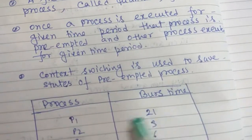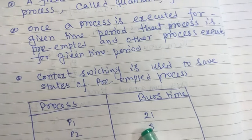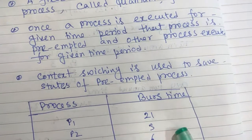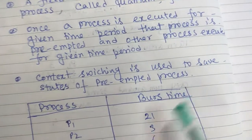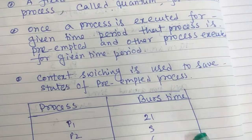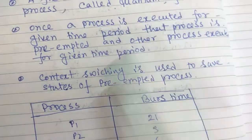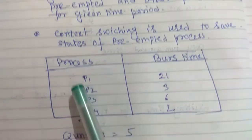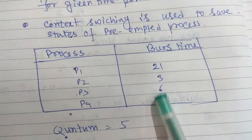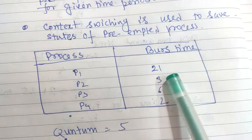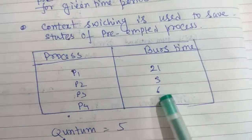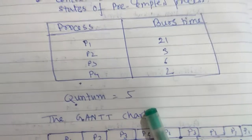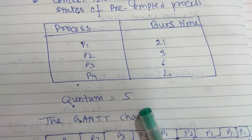If one process is preempted, it can be executed again later using context switching, so any other process can be executed in between. Here, the example gives processes P1 with burst time 21, P2 with 23, P3 with 6, and P4 with 2. Let us assume quantum is equal to 5. Now let us see what the Gantt chart will be.